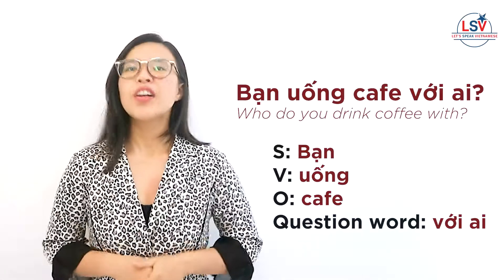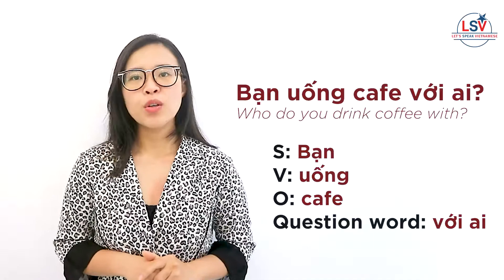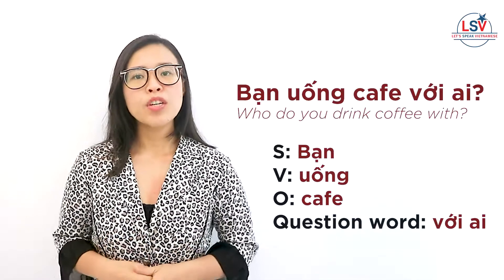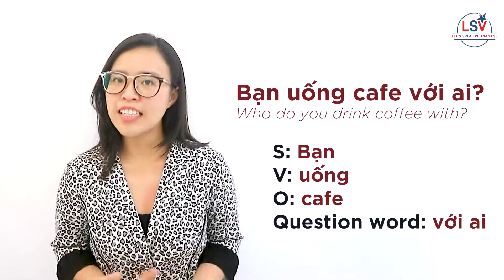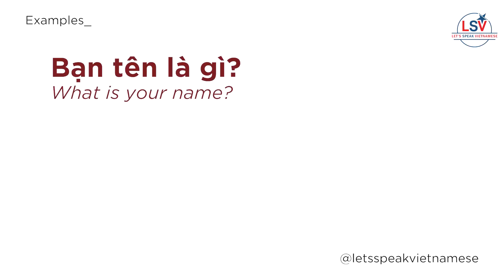Now let's move on to all the question words you need to know. The first one is gì, meaning 'what.' For example: bạn tên là gì? and bạn thích ăn gì?